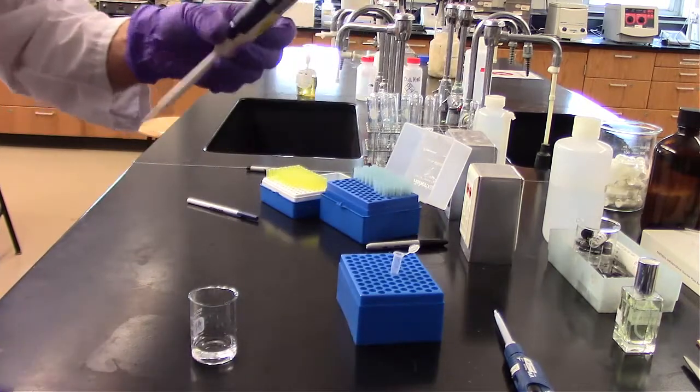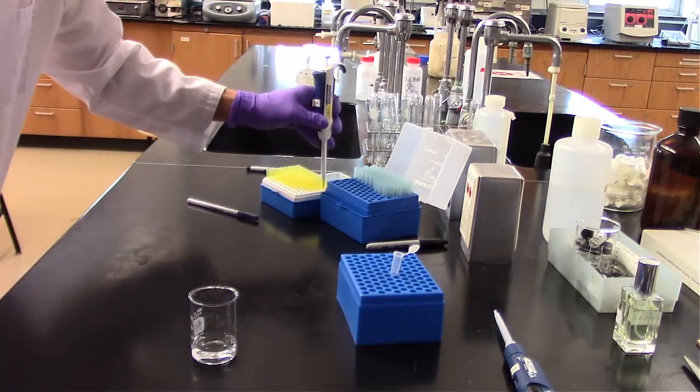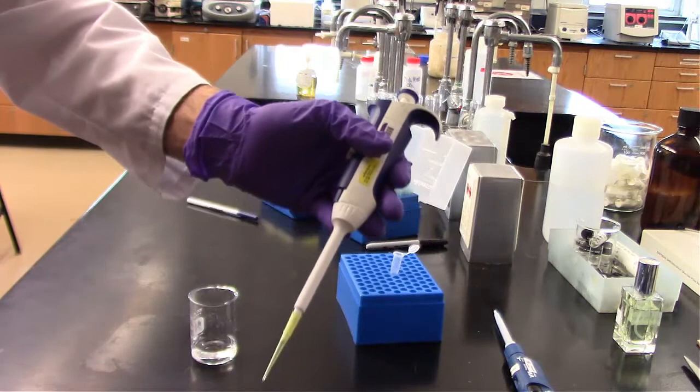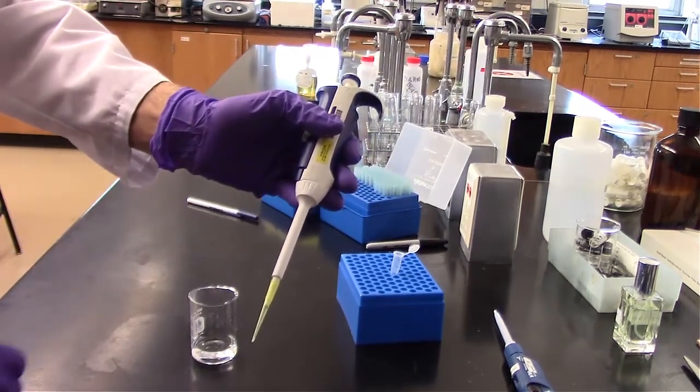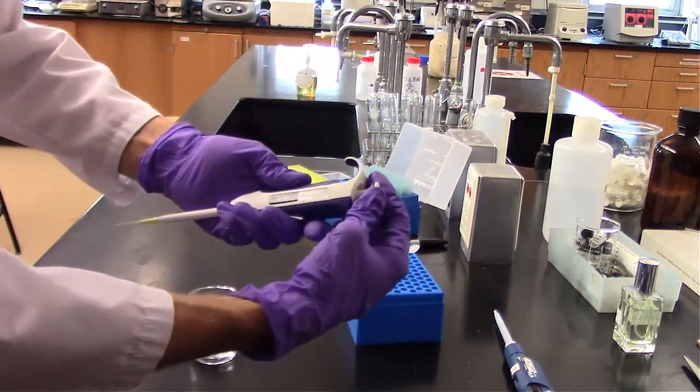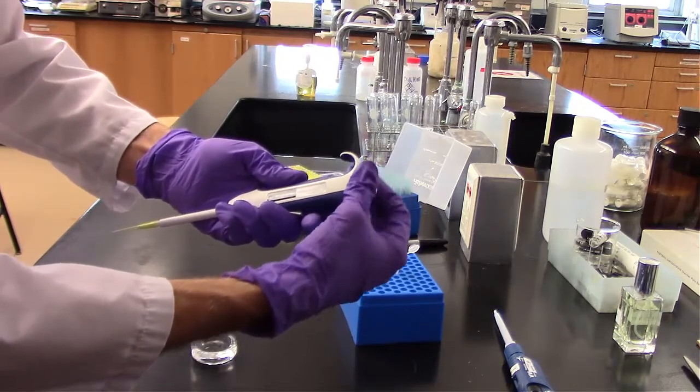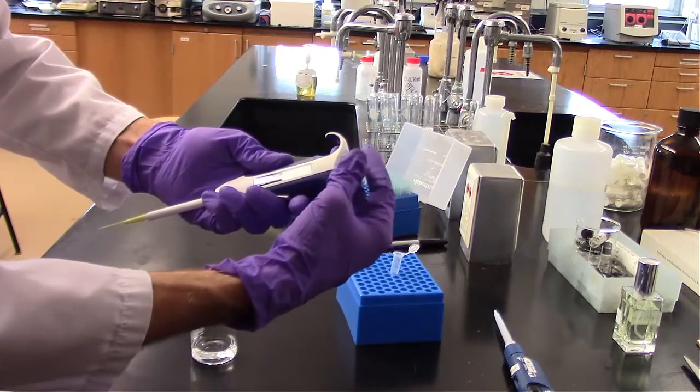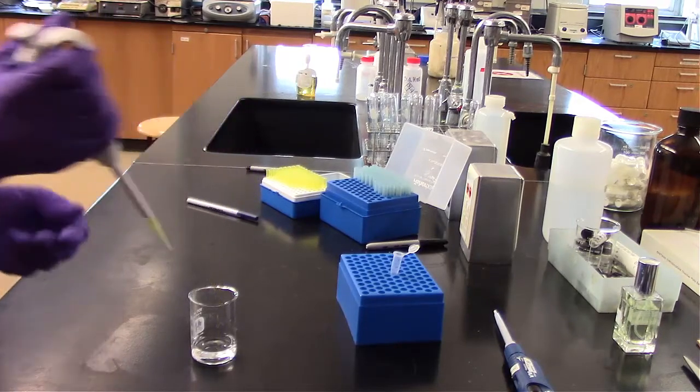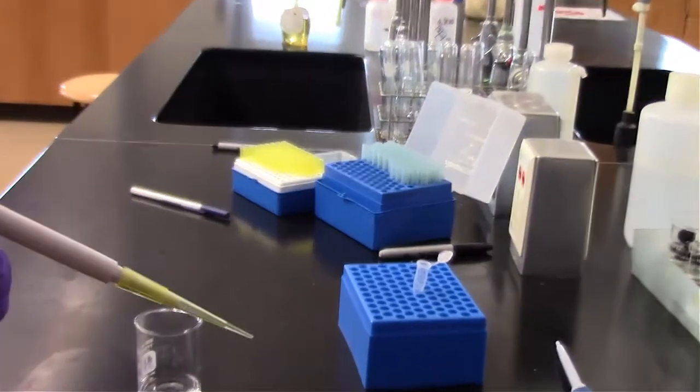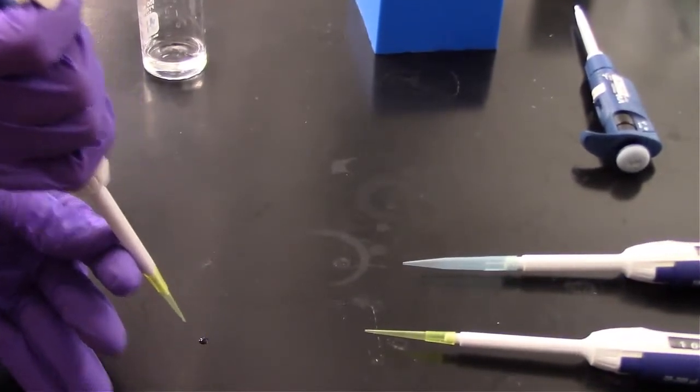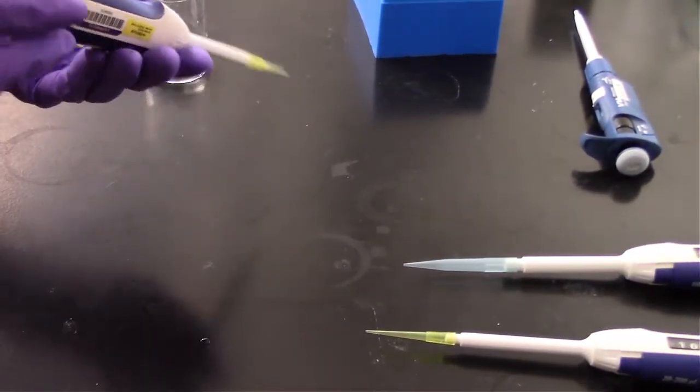Now we have the P20. This P20 uses the same pipet tip as the P200. But you can see the tip is down into the actual pipet tip a little bit more deeply than it was in the P200. This is set to 14.7 microliters. I'm going to take this down to 10 microliters and pull up 10 microliters. You can see that tiny volume in the actual tip there. If I were to just put this on the table here, that is 10 microliters of liquid taken from my P20.